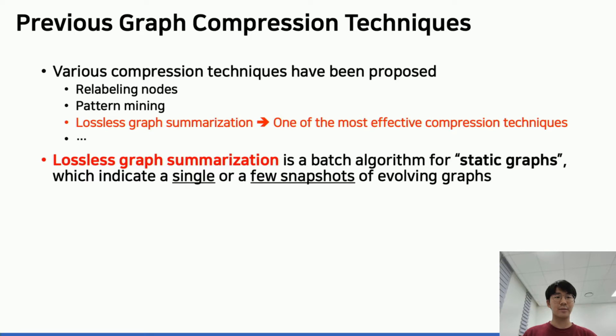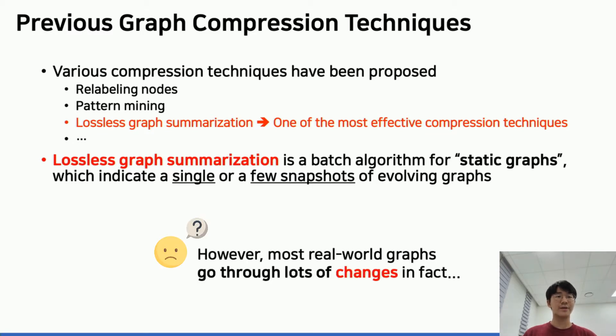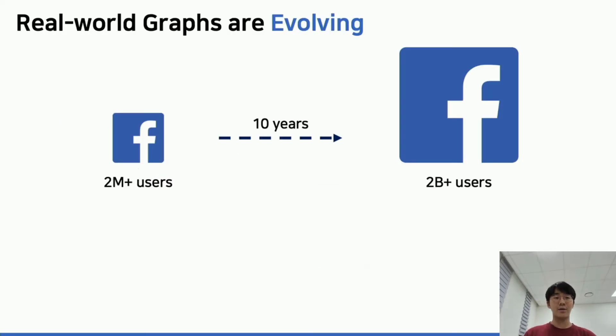This approach is a batch algorithm designed for static graphs. However, one concern we might have is most real-world graphs are still changing even at this moment. Users sign up in Facebook or delete their accounts, and connections are added or removed. In fact, real-world graphs are gaining insights. For example, for the last decade, the number of users in Facebook jumped from 2 million to 2 billion.